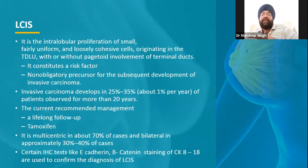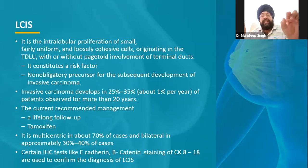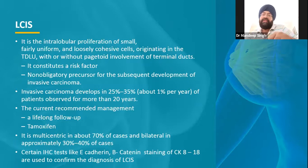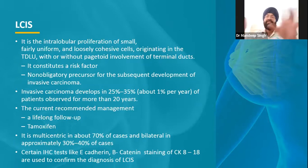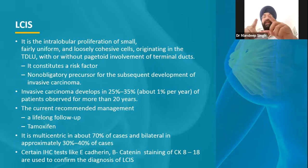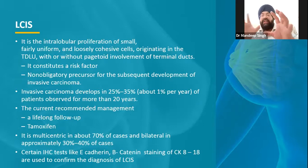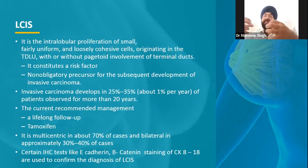Coming to lobular carcinoma: in ductal carcinoma, the cells are still within the ducts when they start forming. In lobular carcinoma, the cells that turn malignant start from the lobules. There is a difference in the nuclear features — DCIS cells are more aggressive, while in lobular carcinoma the cells are slightly less aggressive, better-looking cells with less malignant potential.